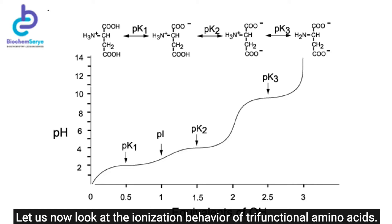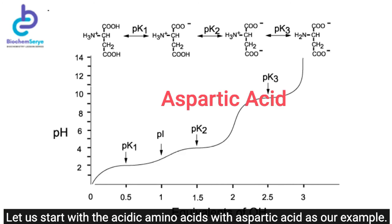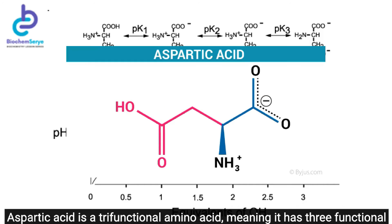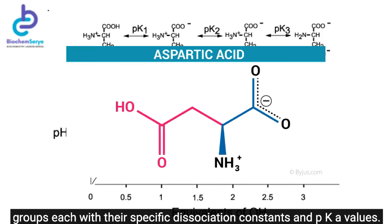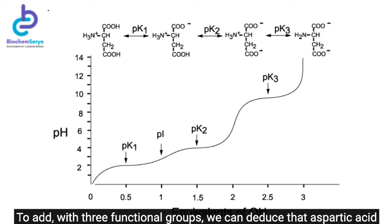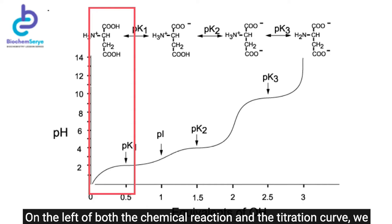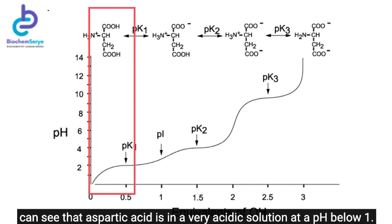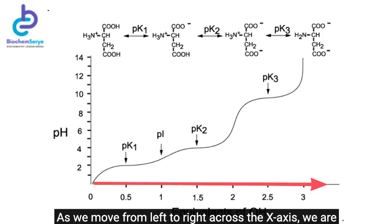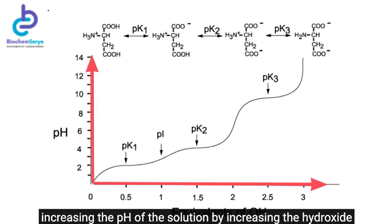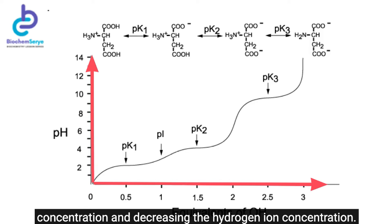Let us now look at the ionization behavior of trifunctional amino acids, starting with the acidic amino acids using aspartic acid as our example. Aspartic acid is a trifunctional amino acid with three functional groups each having specific pKa values. With three functional groups, aspartic acid will have four ionic species with different charges. On the left of the titration curve, aspartic acid is in a very acidic solution at pH below one, and as we move from left to right along the X-axis, we increase the pH.